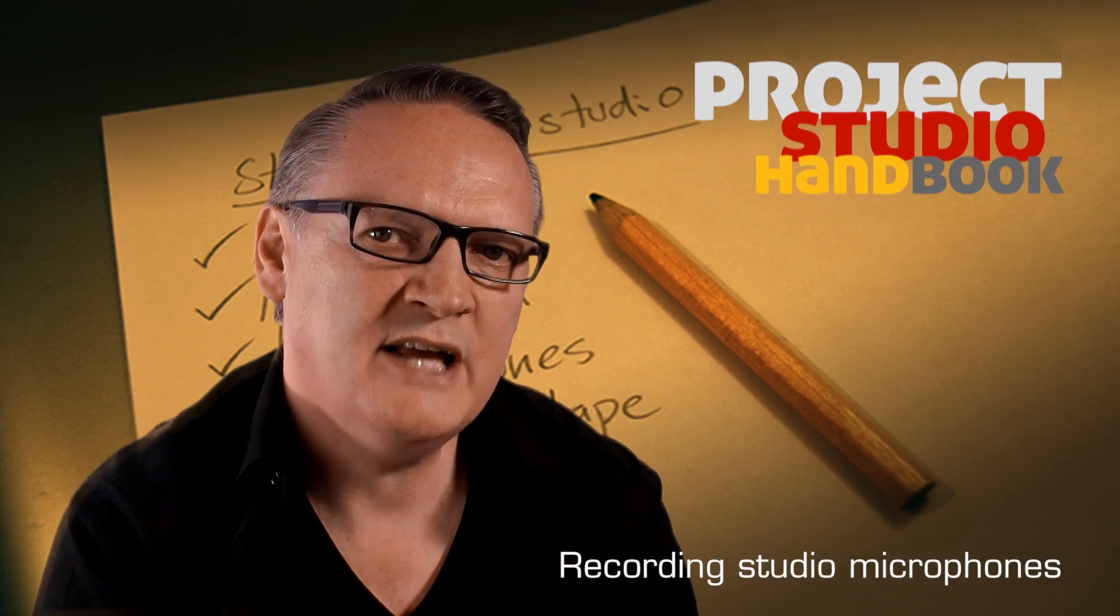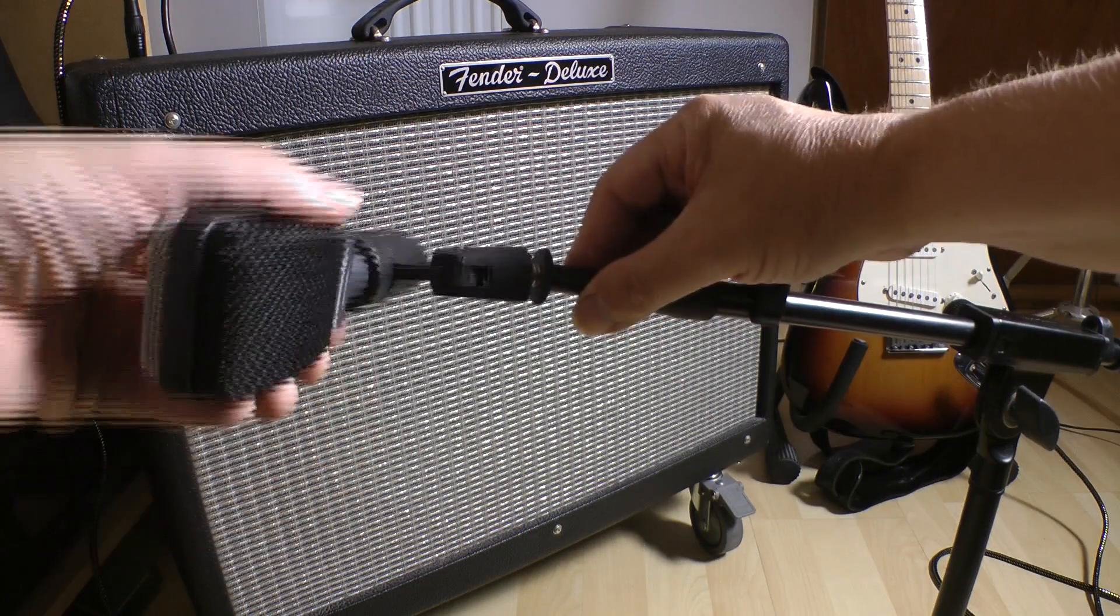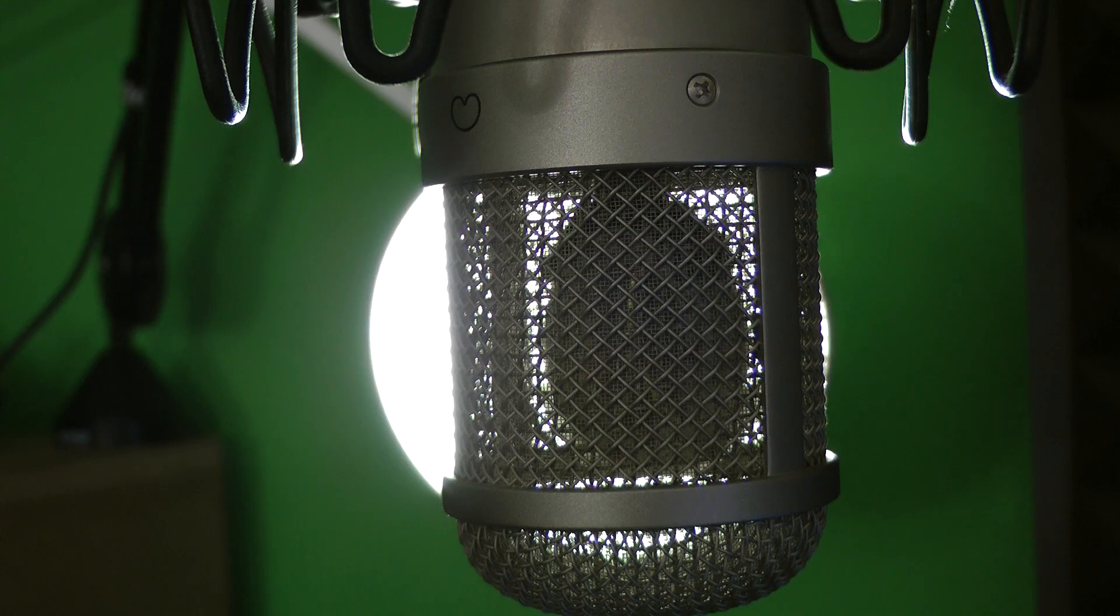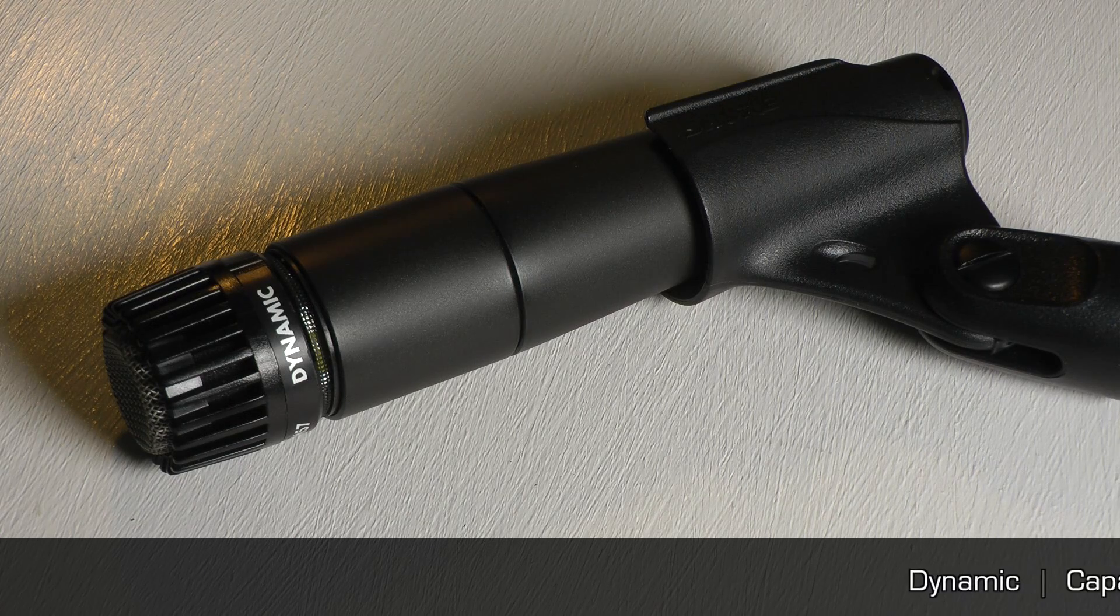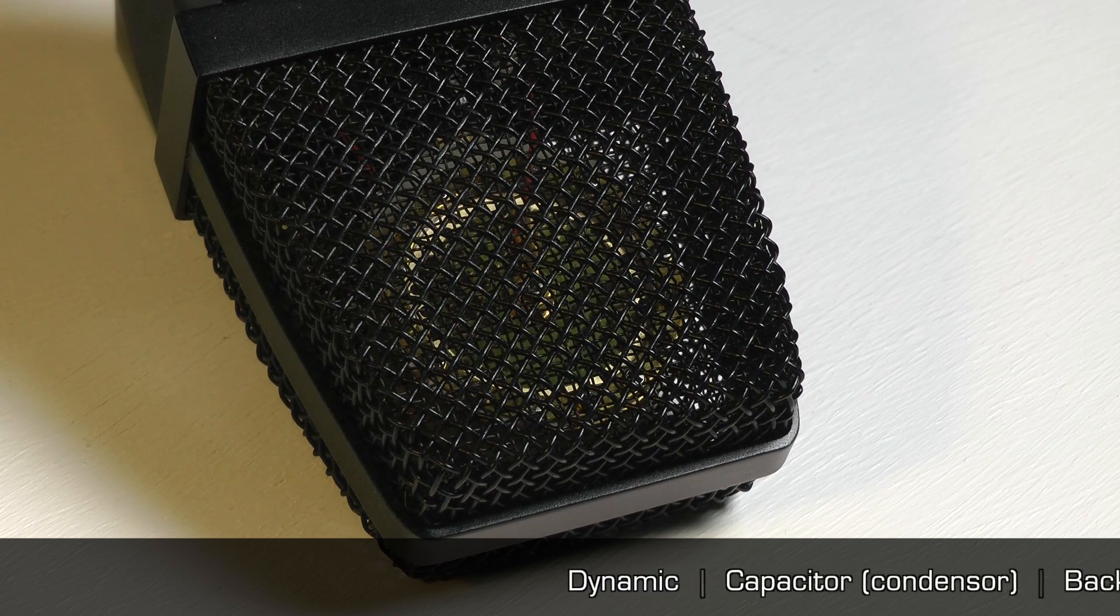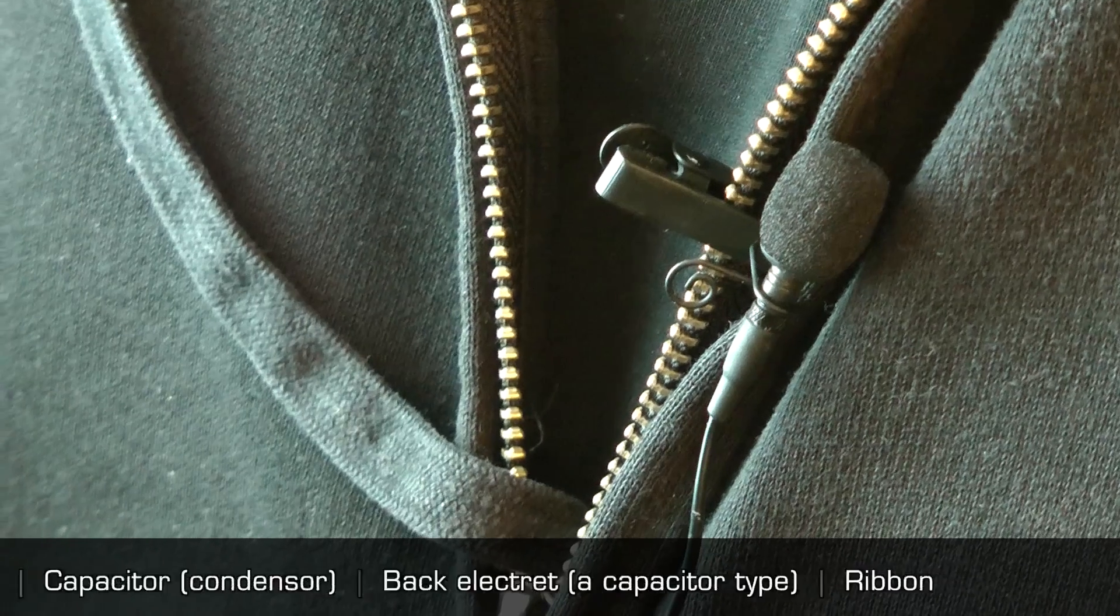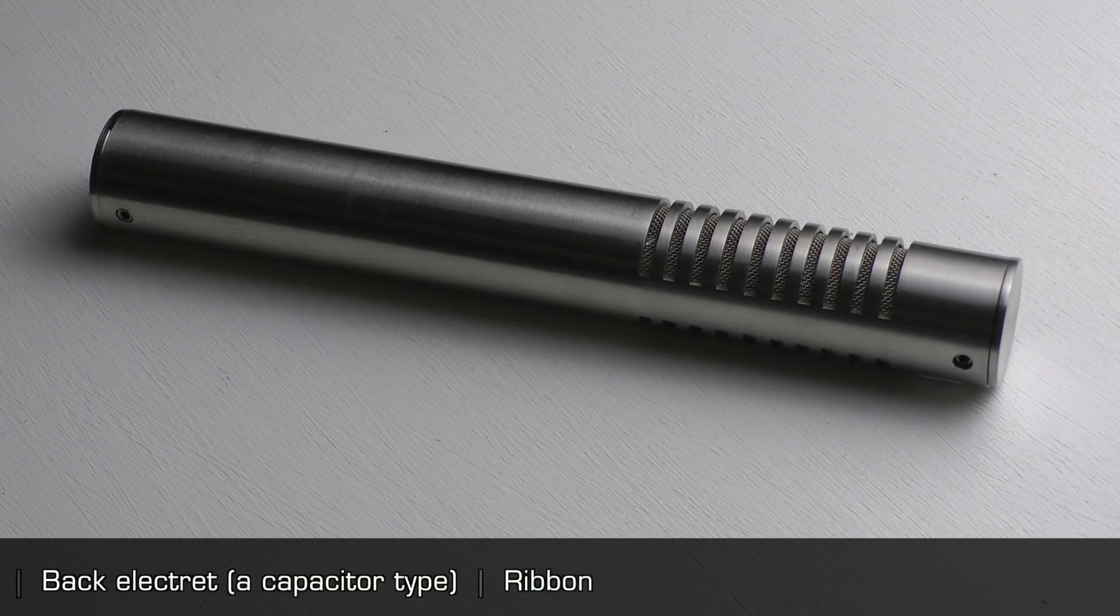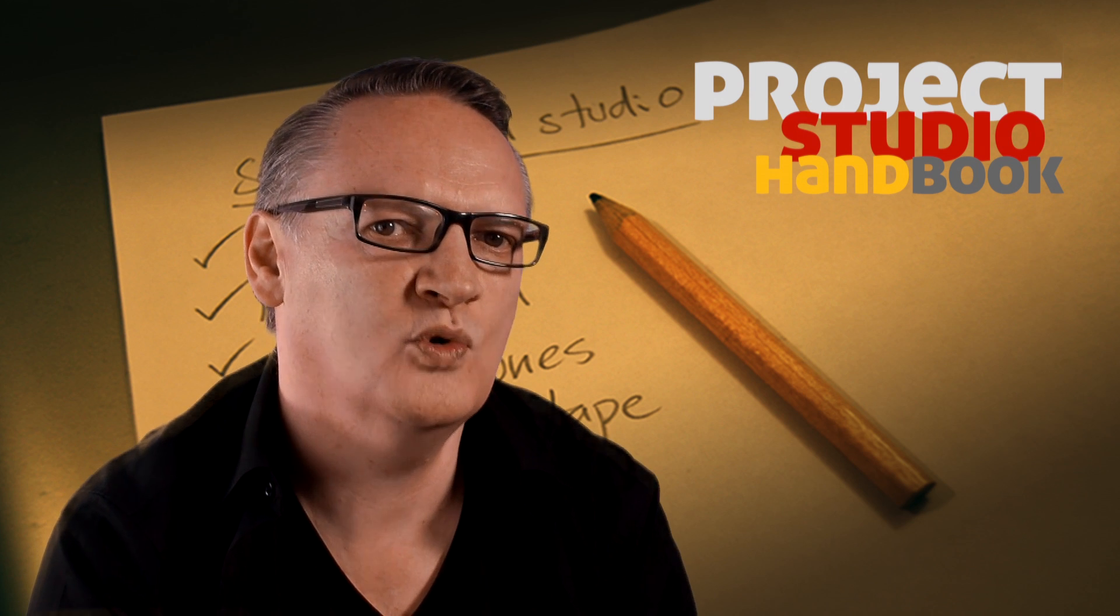There are many different categories of microphones designed for use in a variety of industries. The three primary categories used in the recording studio take their names from the transducer types they employ: dynamic, capacitor and back electric, and ribbon. These three microphone types are covered in detail in separate video tutorials.